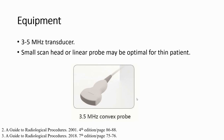Equipment — this focuses on how to choose the probe for bowel ultrasound. The standard is to use a probe of around three to five megahertz. But if the patient is small, thin, or a child, we can use a small scan head or a high-frequency probe to get a better quality image.